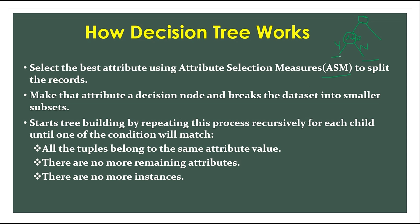This process continues recursively for each child until one of the stopping conditions is matched. For example, there are no more instances, or there are no more data points — suppose there are fewer than 50 data points. If we have no remaining data points or no more attributes to divide, we will stop growing the tree.